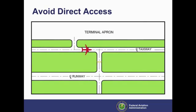This improved configuration jogs the access points from the apron to the taxiway to create intersections that require a pilot to make a conscious turn from the parallel taxiway to enter the runway. The distance between the taxiway exiting the apron and the one accessing the runway should be sufficient to clearly align an airplane on the parallel taxiway.